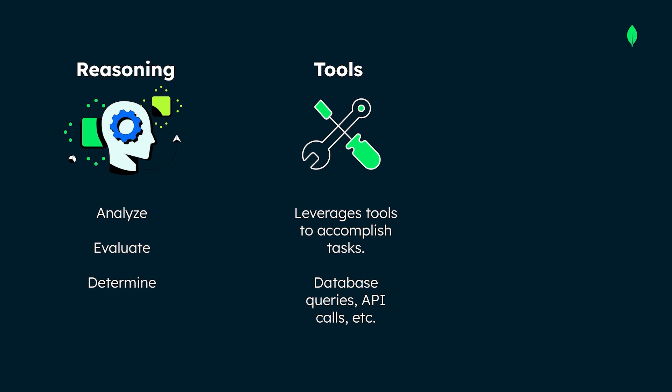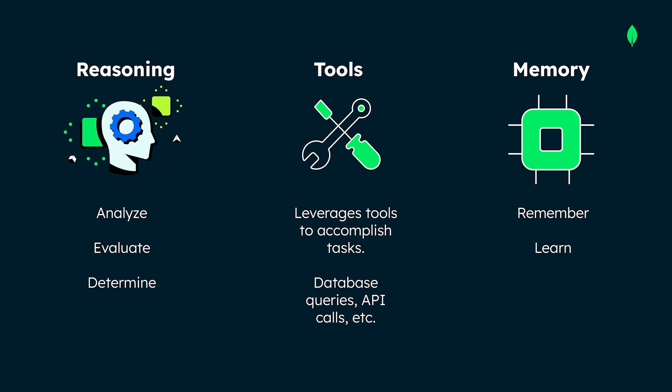Third, agents have memory and maintain context over time. They remember from past interactions, learn from successes and failures, and continuously improve their performance. As we build our own AI agent, we'll get the chance to explore each of these capabilities to help us understand how they work together to make an intelligent system.